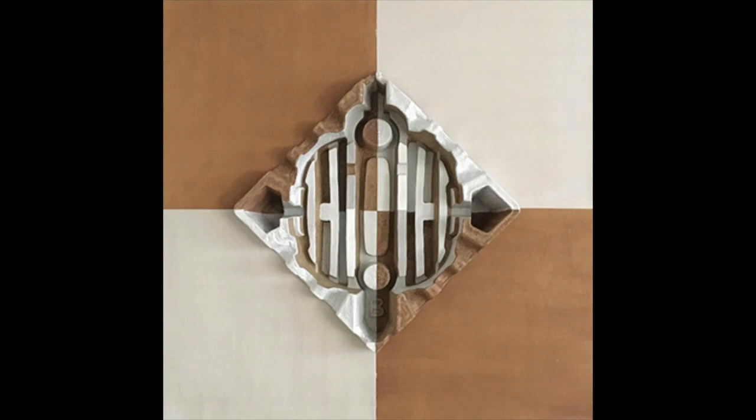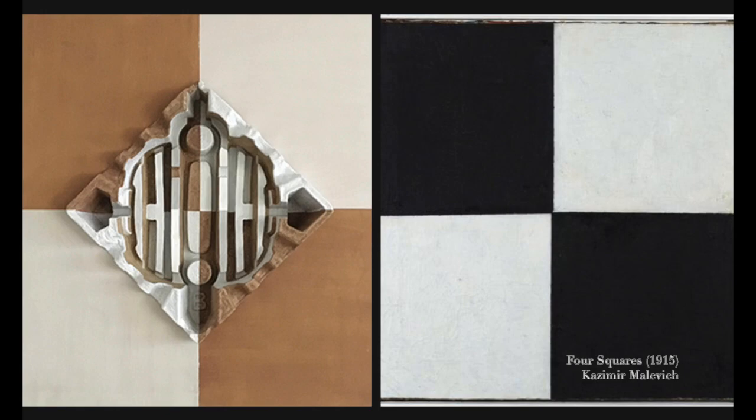By chance, or by choice, as to know how to divide the square, my diamond painting has the same divisions as the non-objective Russian painter Kazimir Malevich's painting Four Squares from 1915. On my work, I turned the square on its point, making the square a diamond, which I mounted in relief on the squares.